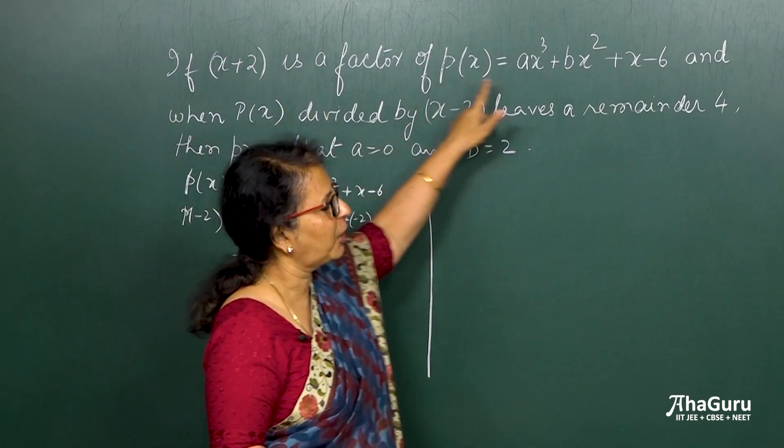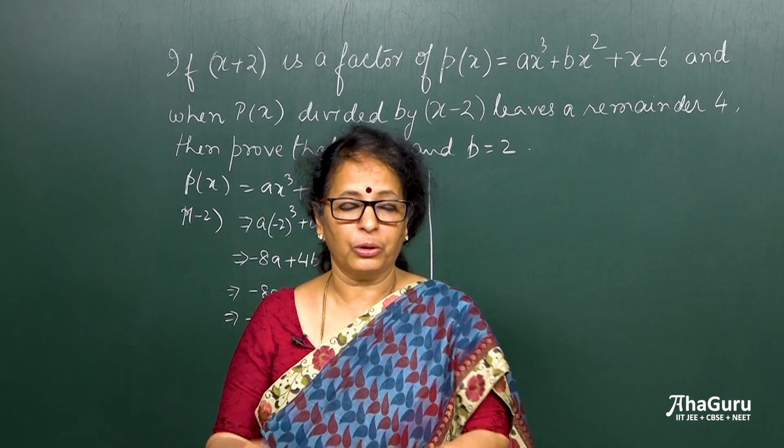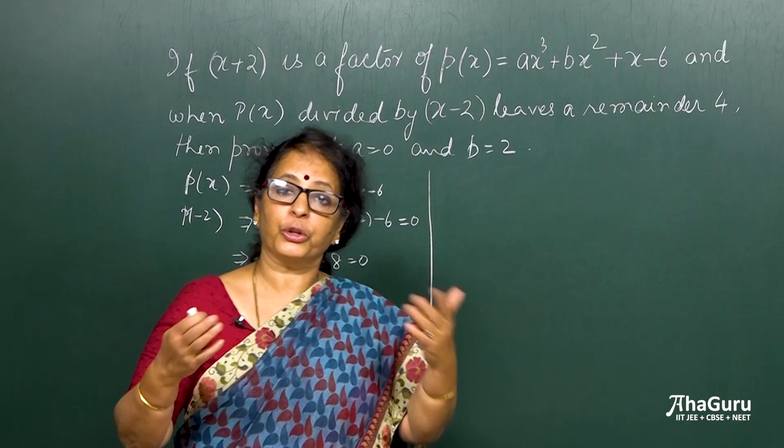So let me just do it here itself. It says p of x, here also p of x is given. Sometimes you may have two polynomials, one for the factor or one for the remainder, or you may have two polynomials for two remainders.